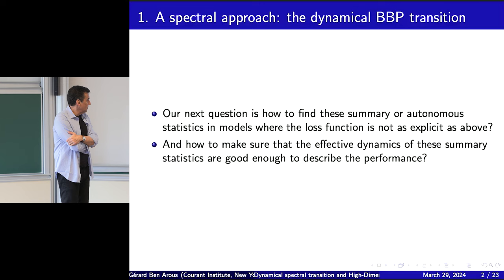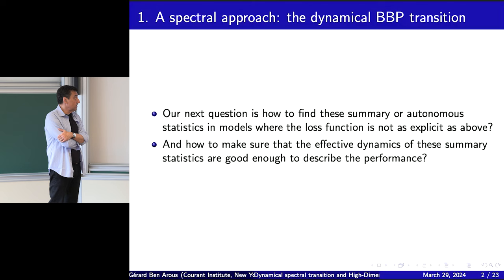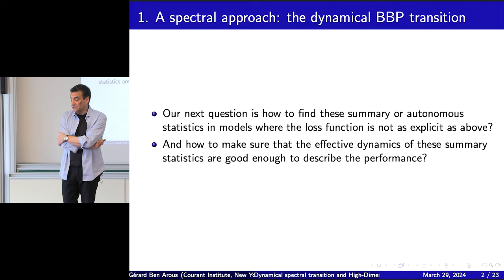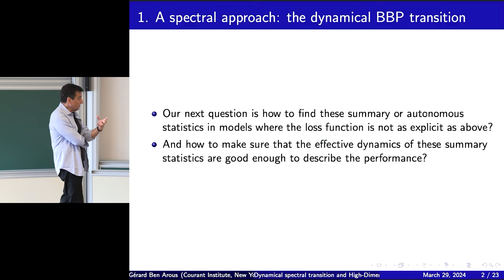The question is: how do you find summary statistics, and how can you make sure that the effective dynamics — these projected dynamics — are good enough to describe the performance? Finding summary statistics is not hard. You could project on zero — that's a summary statistic — but it's not informative enough. I want summary statistics that really capture the performance.